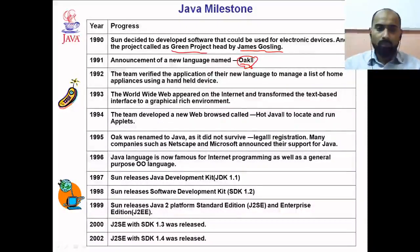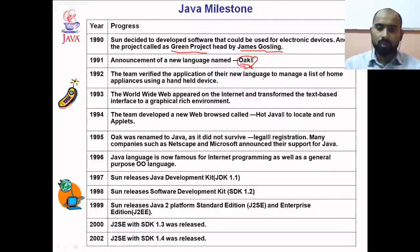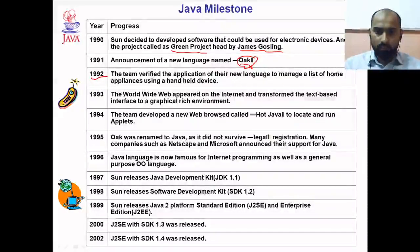In 1992, the team verified the application of their new language to manage a list of home appliances using a hand-held device. In 1993, the World Wide Web appeared on the internet and transformed the text-based interface into a graphically rich environment. This changed the way the internet worked.